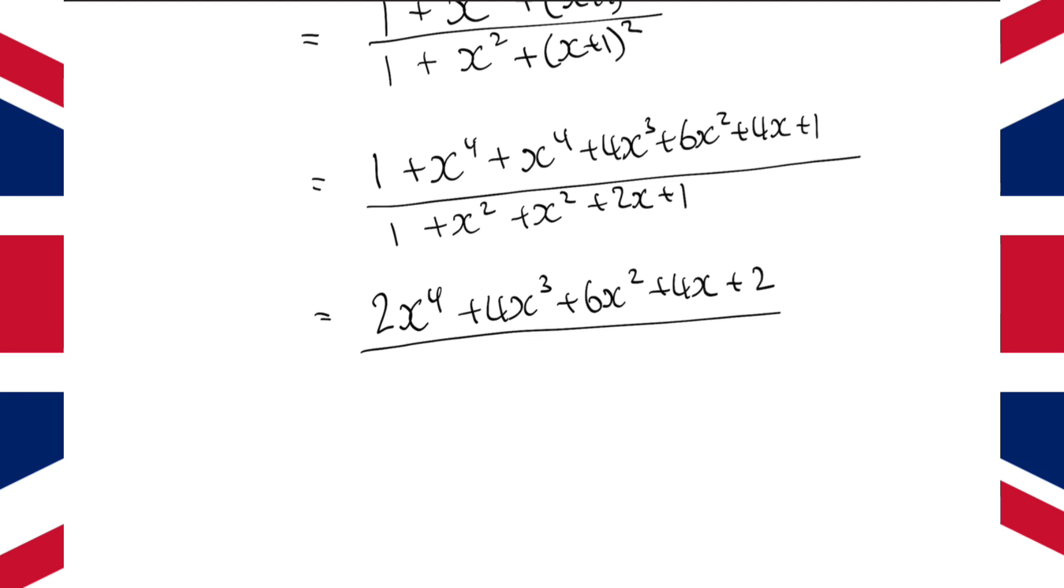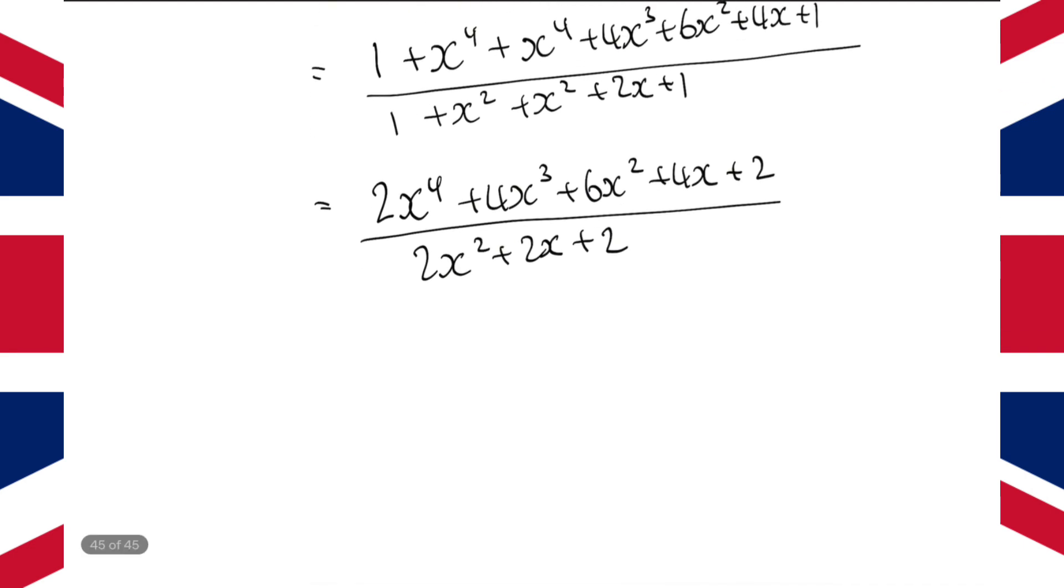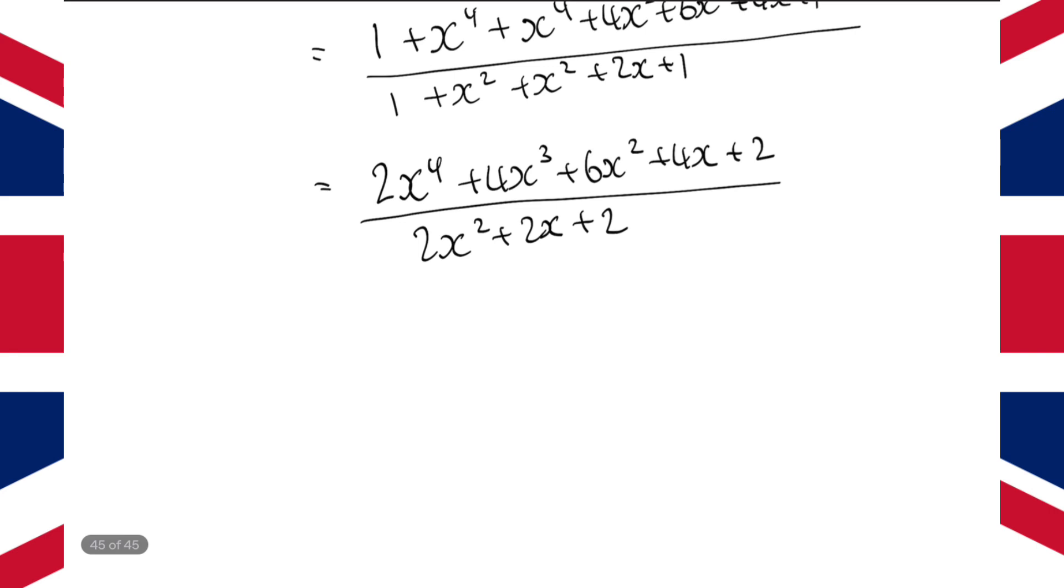Same in the denominator, collecting like terms, we get 2x squared plus 2x plus 2. Now, we can see we've actually got a factor of 2 here in the numerator and the denominator that we could cancel out.